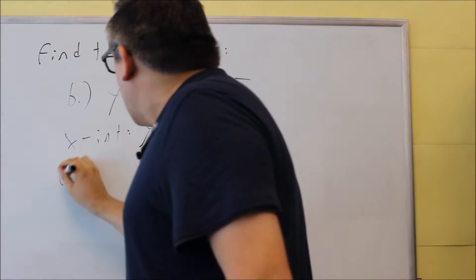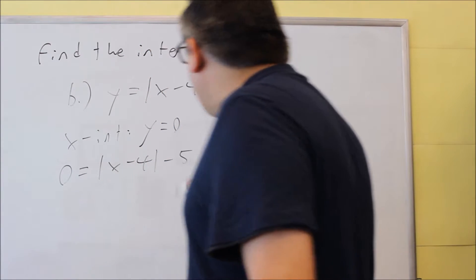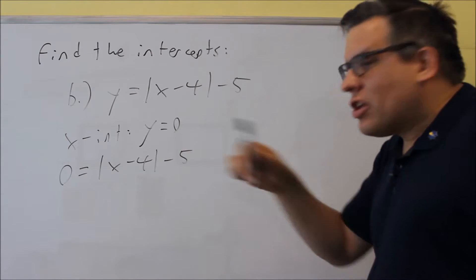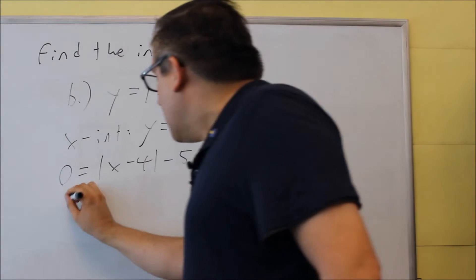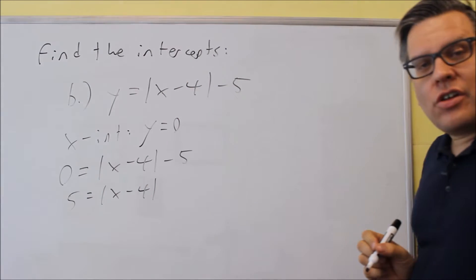Okay, if I put in a 0 for y, I get absolute value x minus 4 minus 5. To solve absolute value equations, you need to get the absolute value isolated. So I'm going to move this over and isolate it just like that.